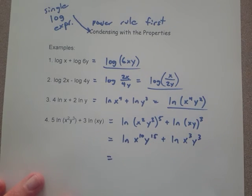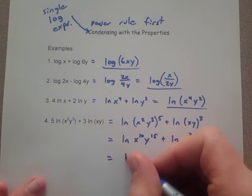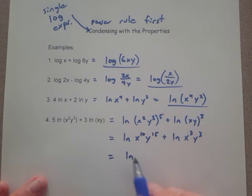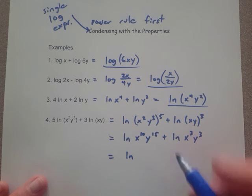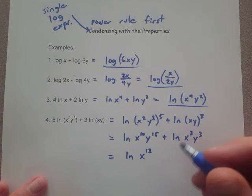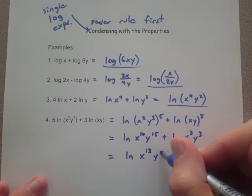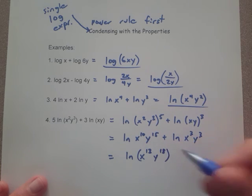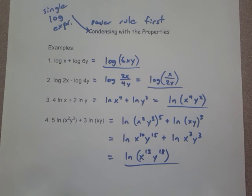Now we're going to combine these using the product rule, getting it down to a single log expression. And so now when you multiply powers, remember that is adding the exponents. So x to the 13th and y to the 18th. And that's going to be our most condensed version of number 4.